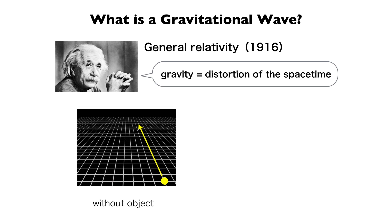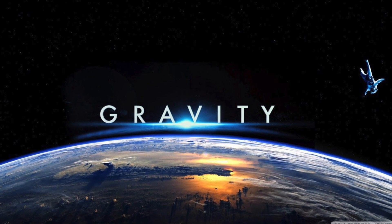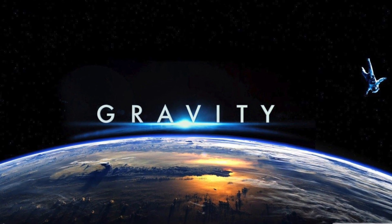For example, in this figure, the space-time is flat when there is no object, and the yellow ball can move straight. While when there is a massive object, the space-time is distorted and the yellow ball is attracted towards the massive object. This attraction force is what we call gravity.